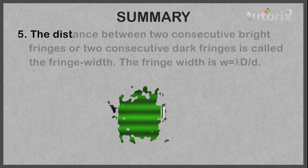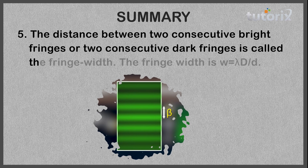The distance between two consecutive bright fringes or two consecutive dark fringes is called the fringe width. The fringe width has a value of lambda·D/d.